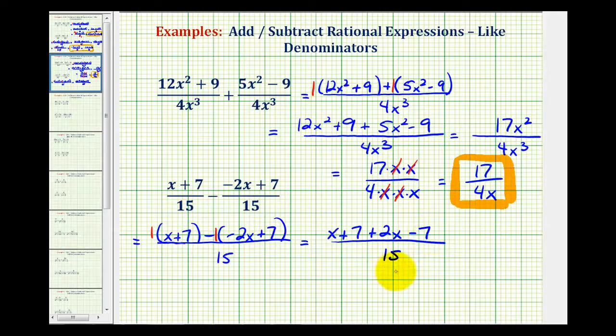Looking at the numerator, notice how we have +7 - 7, that would be 0. And we also have 1x + 2x, that's going to be 3x.